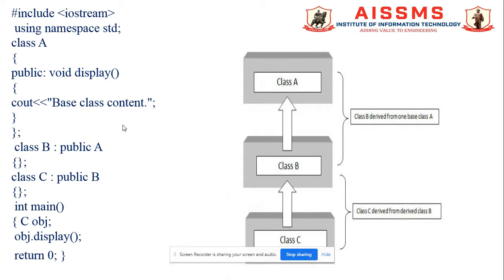With the help of this diagram, you can easily trace out how the derived class inherits the properties and features of base class. For C, B is the parent class. And for B and C, A is the parent class or super class.